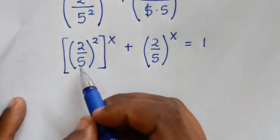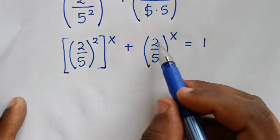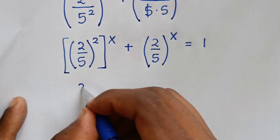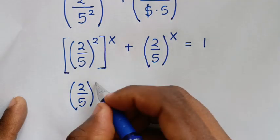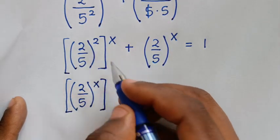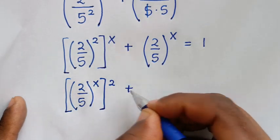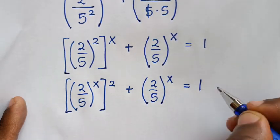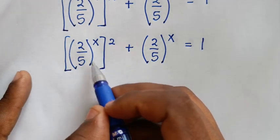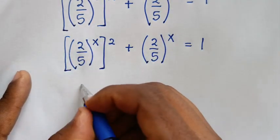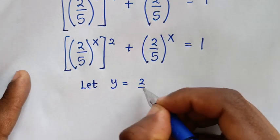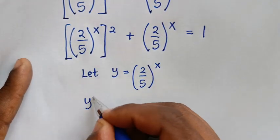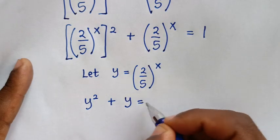In the next step, we let y equal (2/5)^x. Then (2/5)^(2x) becomes y squared, so the equation becomes y² plus y equals 1.